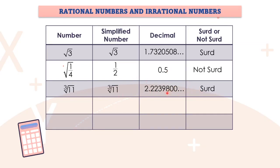So to summarize: rational numbers can be expressed as fractions, while irrational numbers — including surds — cannot. Surds are irrational numbers expressed in root form that give infinite, non-recurring decimals. Now we move on to the next example.